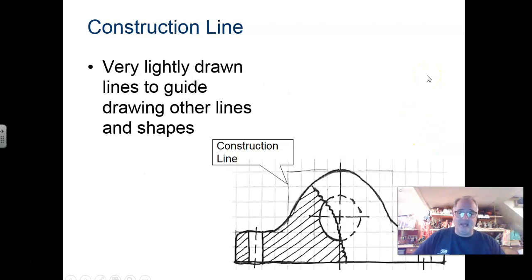With the construction line, you can see right here, this is a light, very light, faint construction line. It goes across, and you can hardly see that. Those are there as guides to help you when you're drawing. They help you create and generate either other lines or the shapes to box it in.